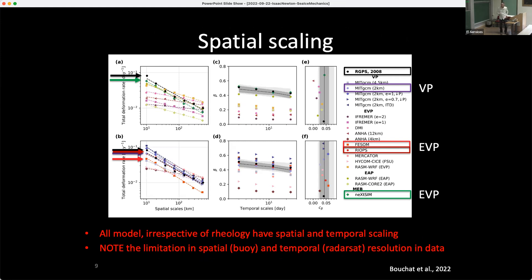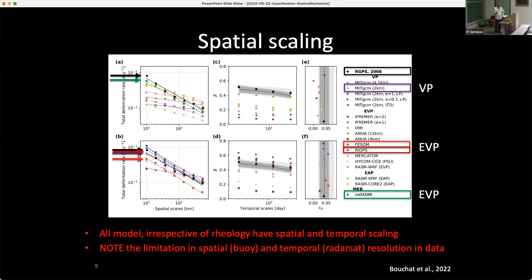There was a very nice paper by Amélie Bouchard in 2002 — the CIRX-1 — and Niels Hutter will be presenting CIRX-2 later in the afternoon. Basically, 35 different runs, all rheologies — MEB, EVP, VP, EAP — they were all there. They ran for two years and calculated the deformation. The message we get is that every single model, irrespective of their physics, shows localization in space — they all have scaling.